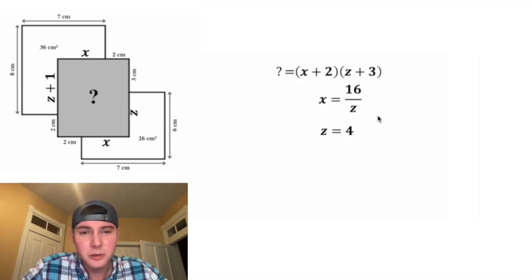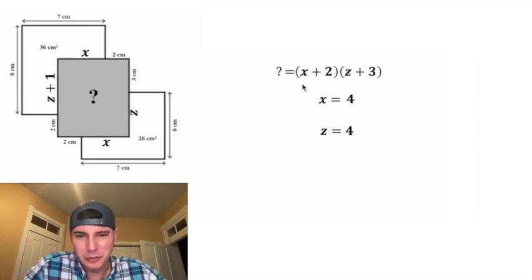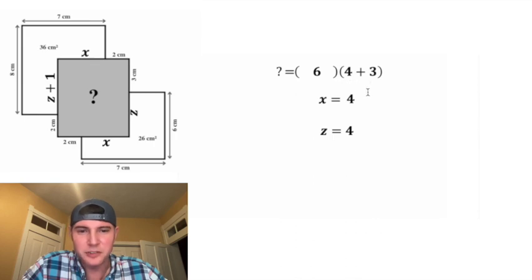So since we know that z equals 4, I'm going to plug in 4 for this z right here. And 16 divided by 4 is 4. So we know x equals 4, so we can plug in 4 for this x. And we know z equals 4, so we can plug in 4 for this z. Here, 4 plus 2 is equal to 6. And here, 4 plus 3 is equal to 7.